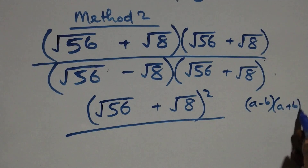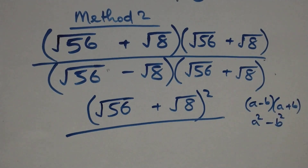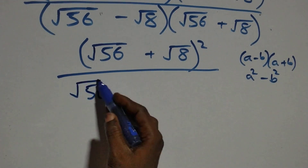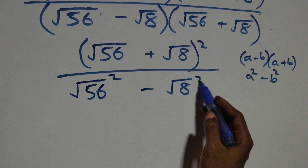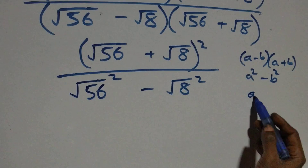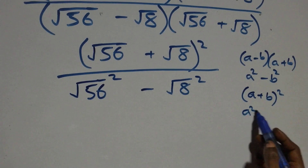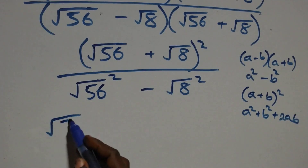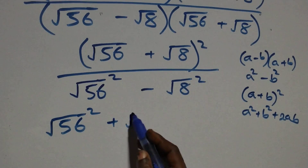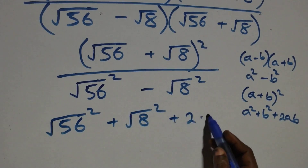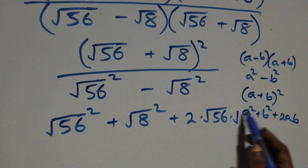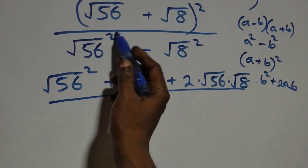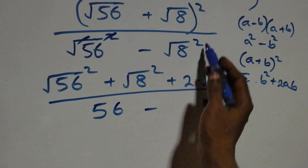The denominator follows from a minus b times a plus b, which equals a squared minus b squared — the difference of two squares. So the denominator becomes root fifty-six squared minus root eight squared. Squaring a square root removes the radical, giving fifty-six minus eight, which equals forty-eight.